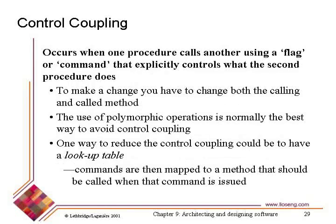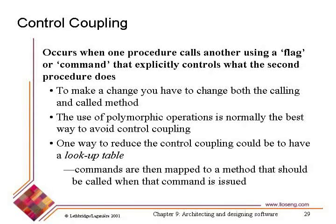We talked about control coupling, which is the notion where you have one procedure or routine that is exerting a very strong influence over another — or one component sending messages that another is dispatching, as in the simple chat system where we had handle-message-from-server with a whole bunch of if-then-else statements. Anytime you see large numbers of if-then-else or switch statements, you know that one component is controlling another. We want to reduce that, perhaps by using polymorphism or a look-up table.